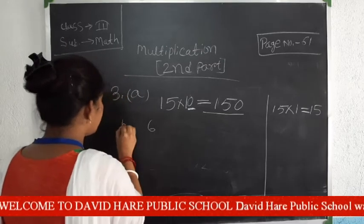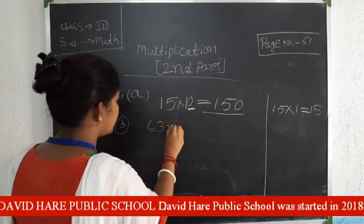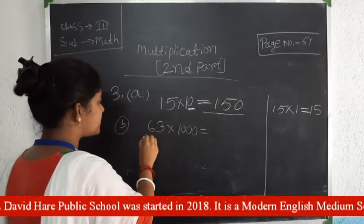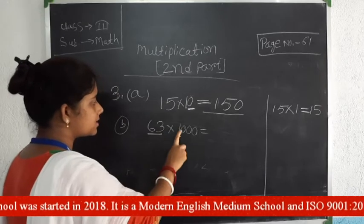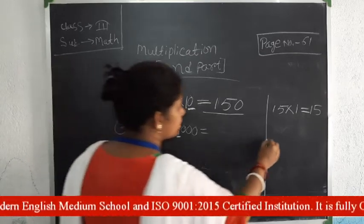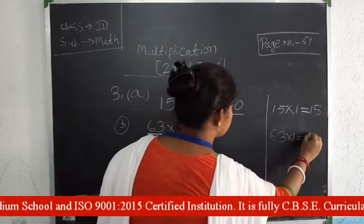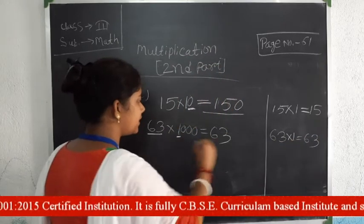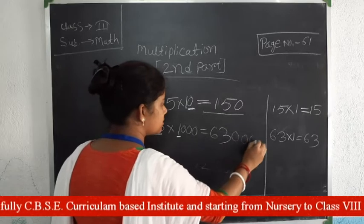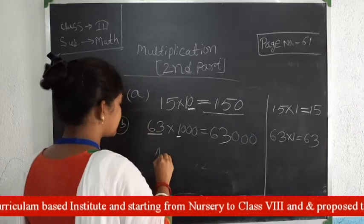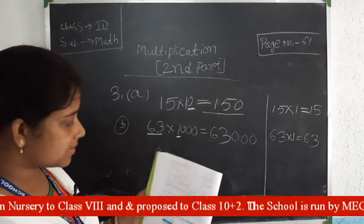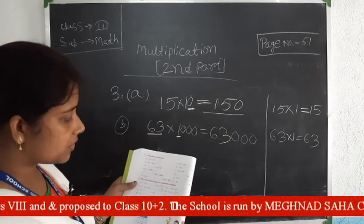Problem B: 63 multiplied by 1000. First multiply 63 by 1 — ignore the zeros and multiply 63 by 1, which equals 63. Then count the zeros: 1, 2, 3 — there are three zeros, so put three zeros at the end. The answer is 63,000. Similarly, you can solve all the other problems easily.